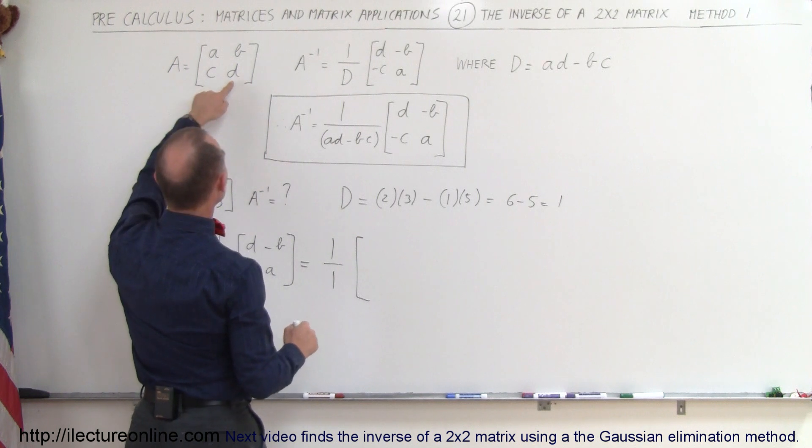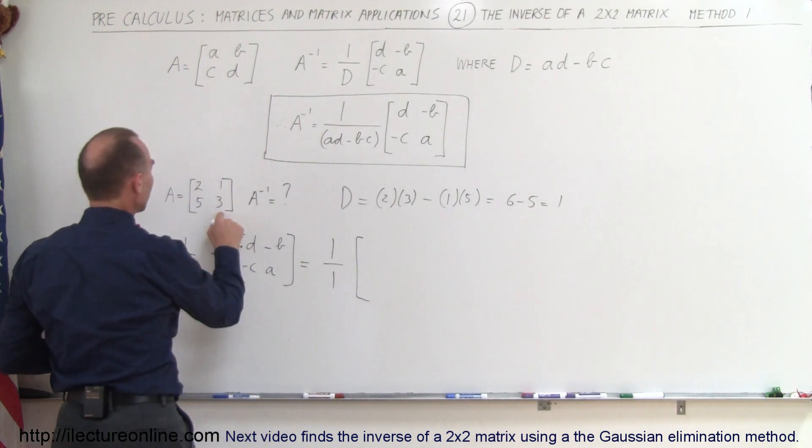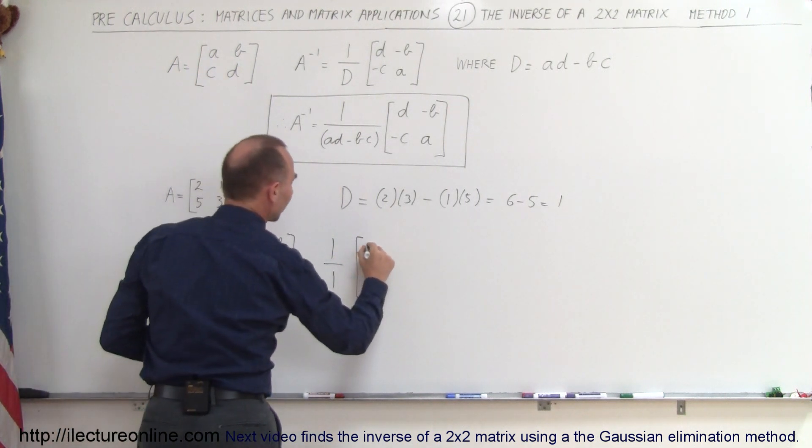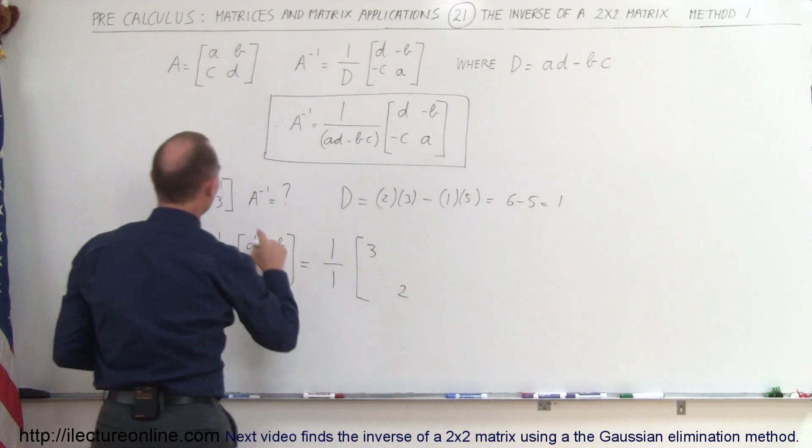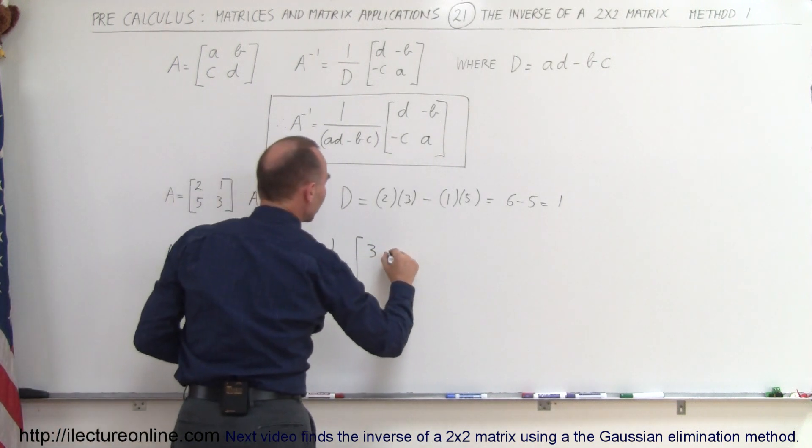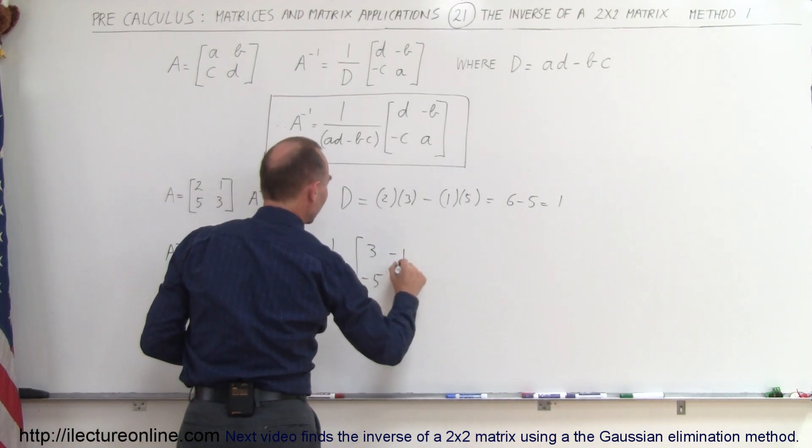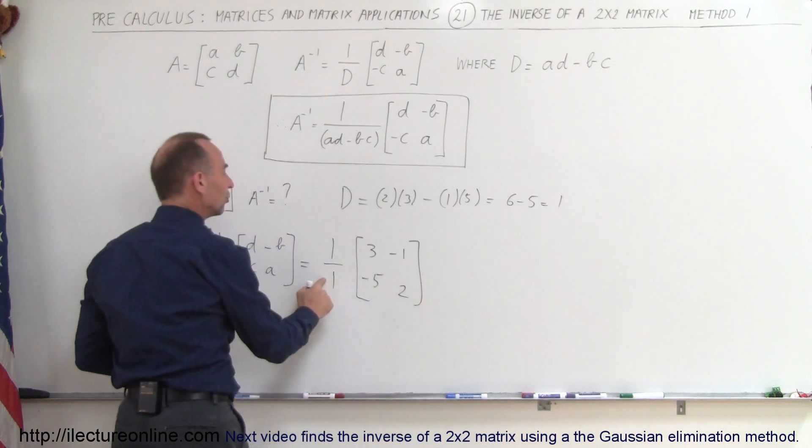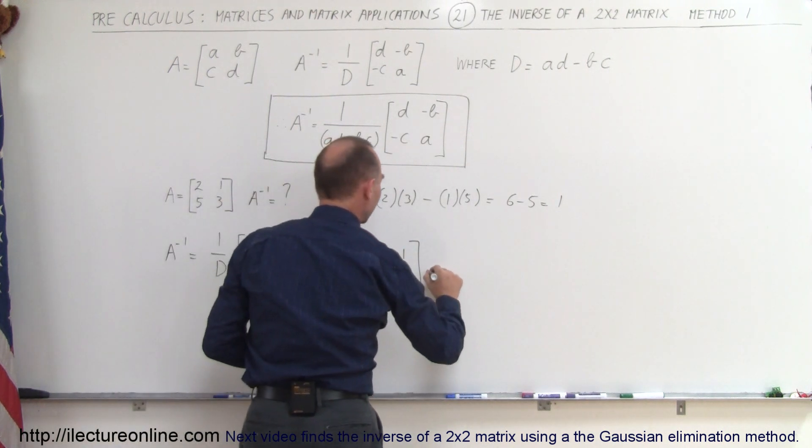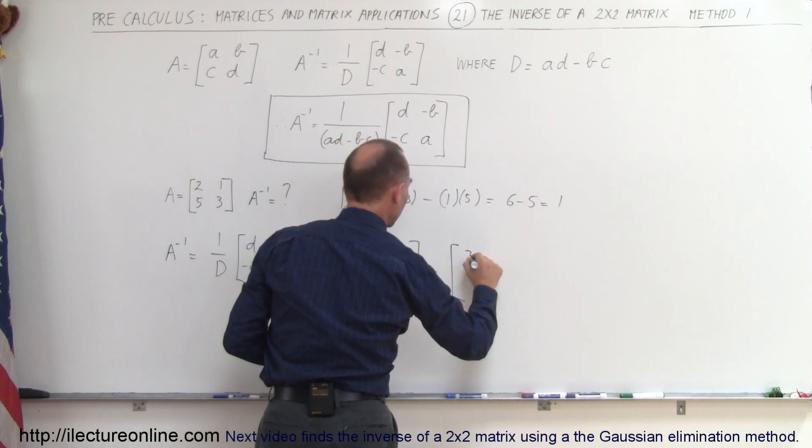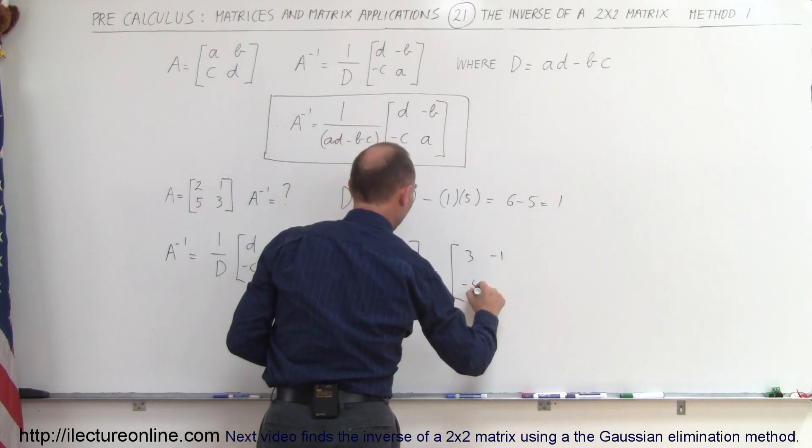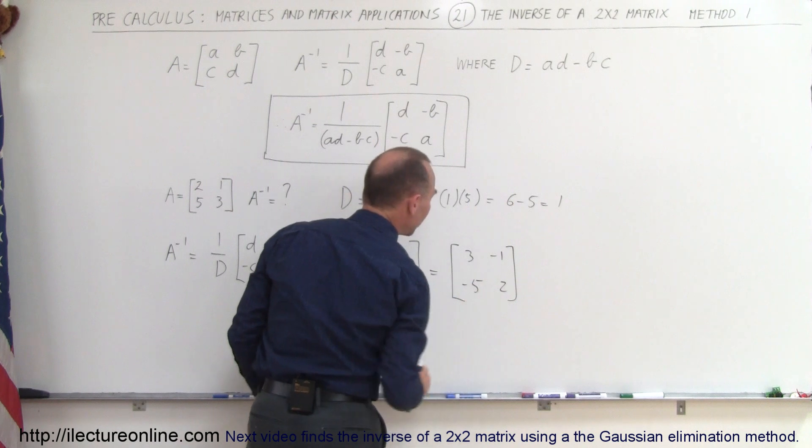So instead of d down here, it goes up here, so the 3 goes up there, and the 2 comes down here. And the 1 and the 5 simply change the sign. So it becomes a minus 1 and a minus 5. And since the determinant is equal to 1, we multiply the whole matrix by 1, and we get this is equal to the matrix 3, negative 1, negative 5, and 2.